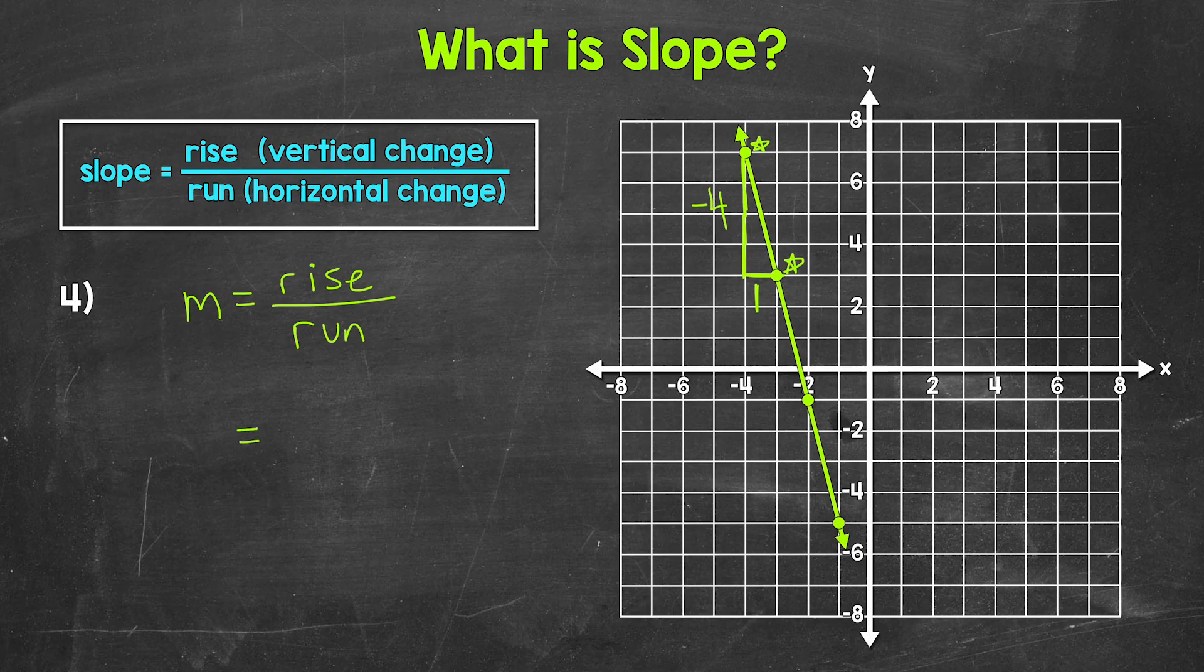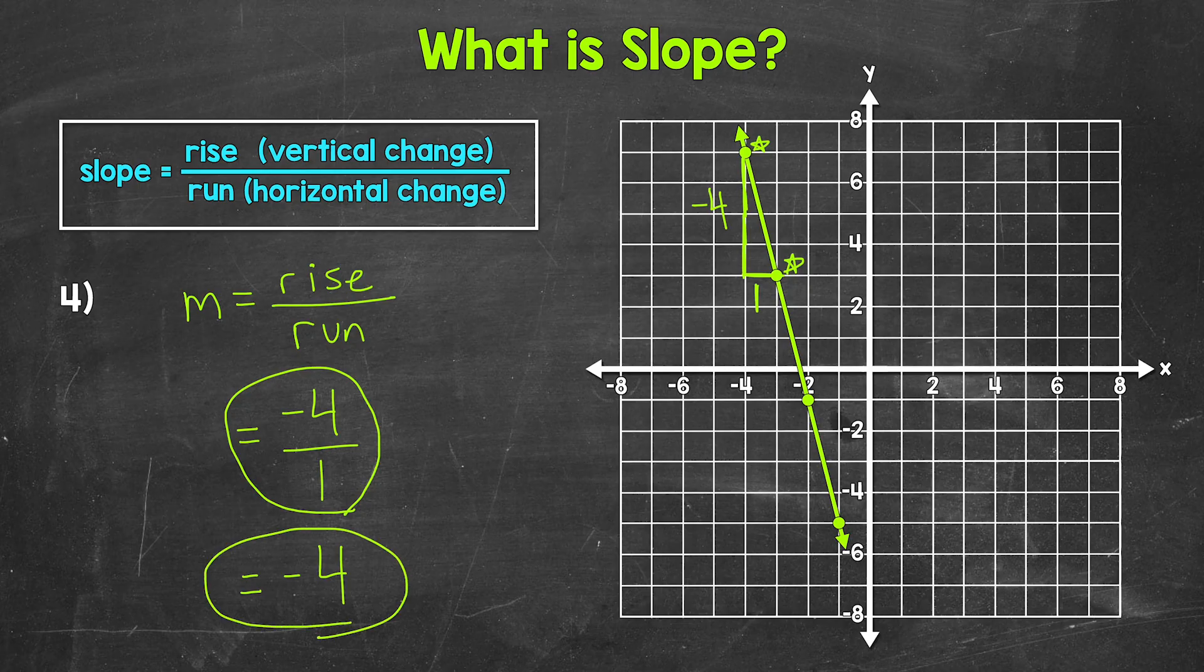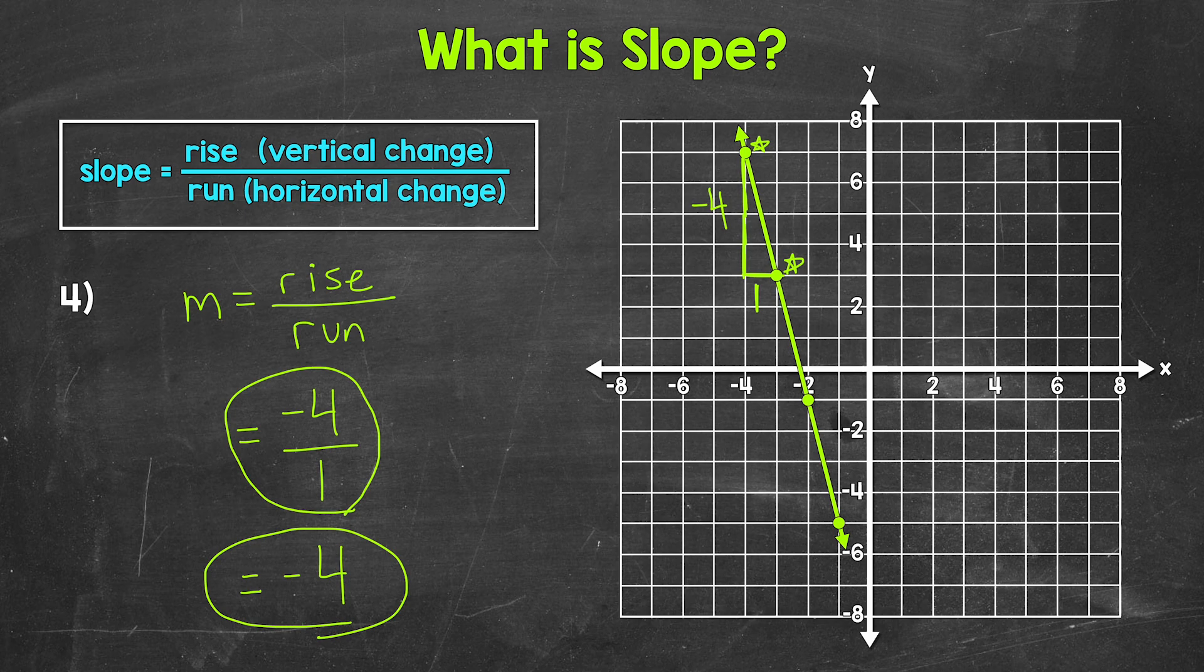So our slope is negative four, that's our rise over one, that's our run. So our slope here is negative four over one. And since our denominator is one here, we can also write this slope as just negative four. Either of these will work and mean the same thing. Keeping the fractional form makes the rise and run a little more clear, but you will see slope written as just an integer as well. So if you ever see the slope written as just an integer, so no fraction, the run is one.